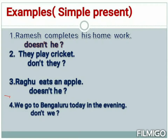Based on my teaching, I have given some examples. First: 'Ramesh completes his homework' — it's in simple present tense, so the suitable question tag is 'doesn't he?' Similarly: 'They play cricket — don't they?' 'Ragu eats an apple — doesn't he?' 'We go to Bangalore today in the evening — don't we?'